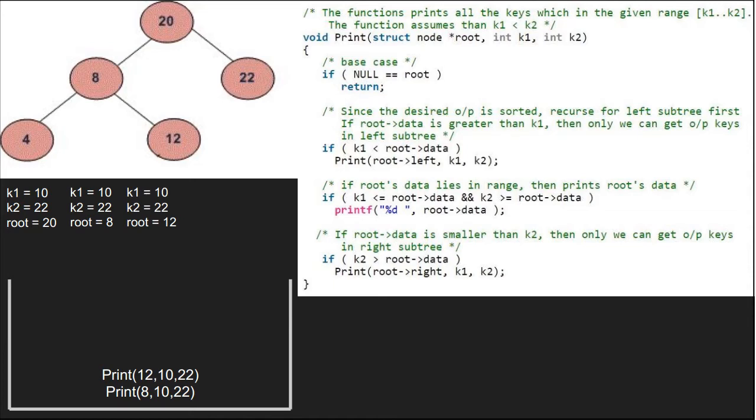Again, as root is not null, we check if k1 is less than root's data. As it is true, we pass the left child of 12 which is null. Now, as root is pointing to null, we return to the previous call. We check if root lies between k1 and k2. As it is true, we print root. So, 12 is printed.